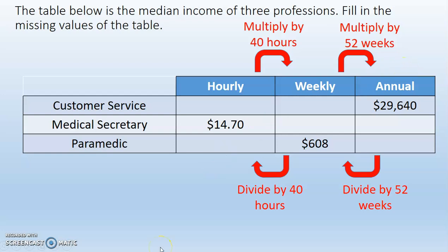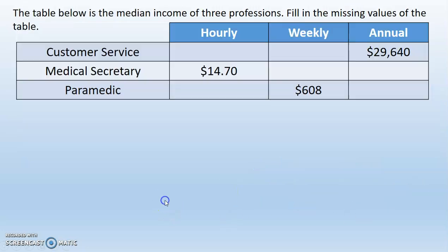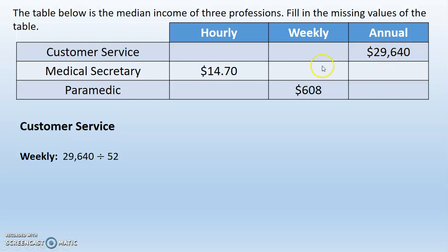Let's fill in the values of the table using this strategy. Starting with our customer service representative: going from annual to weekly, we divide by 52, and that's $570. Now going from weekly to hourly by dividing by 40, that's $14.25.